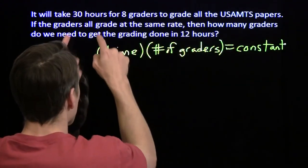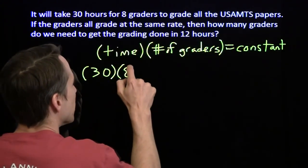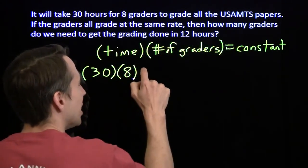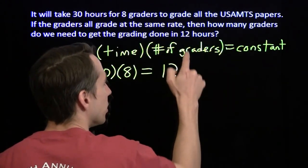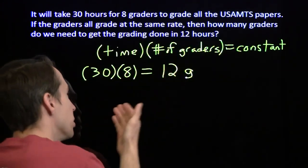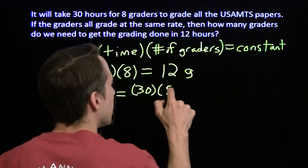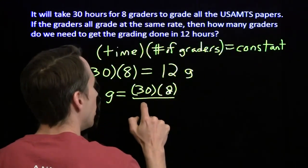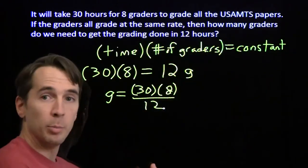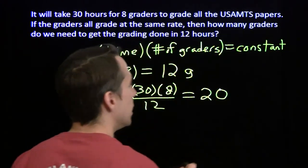We have this nice inverse proportionality, and we can set up and solve this problem. We know that this constant is 30 times 8. So if I want to cut that time down to 12, I'll let the number of graders we need be g. We have this equation. Divide both sides by 12. We get 30 times 8 over 12. 8 divided by 12 is 2 thirds. 2 thirds of 30 is 20.